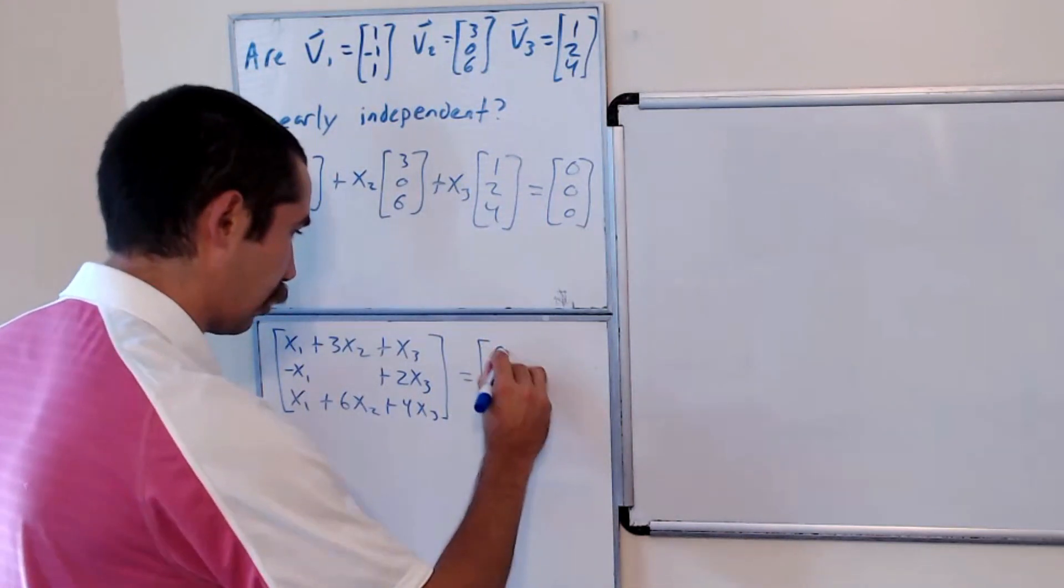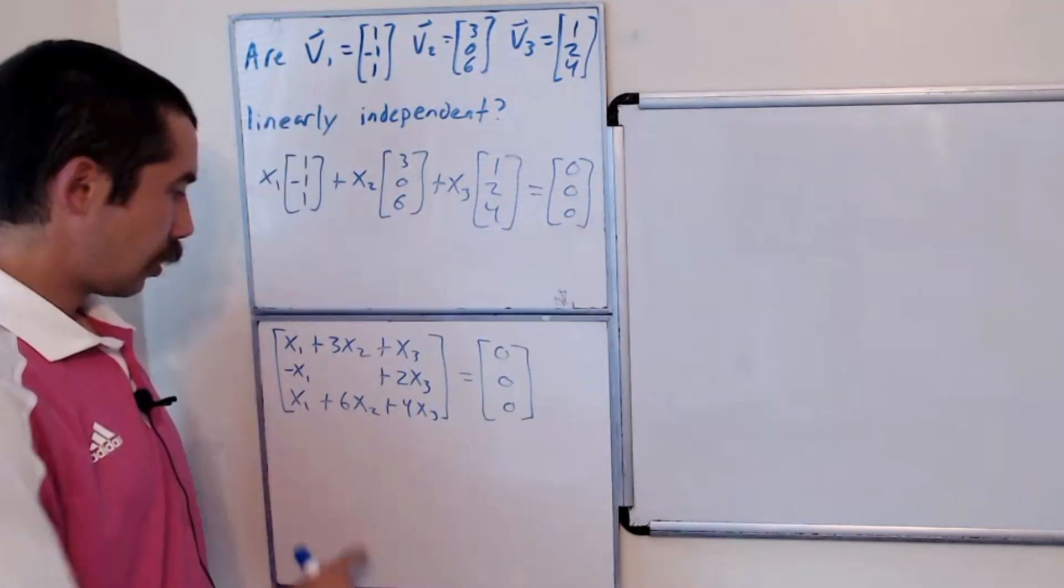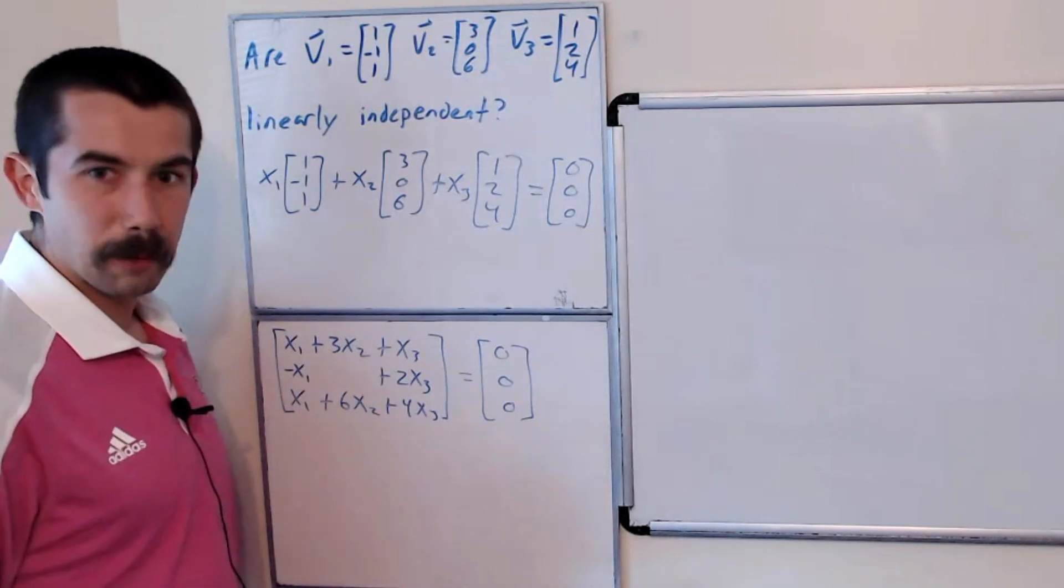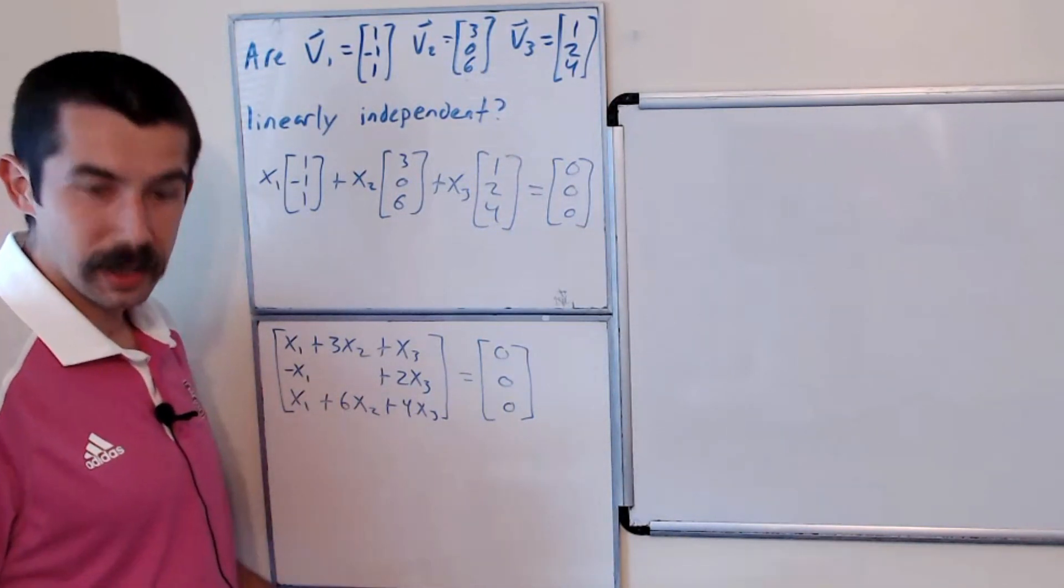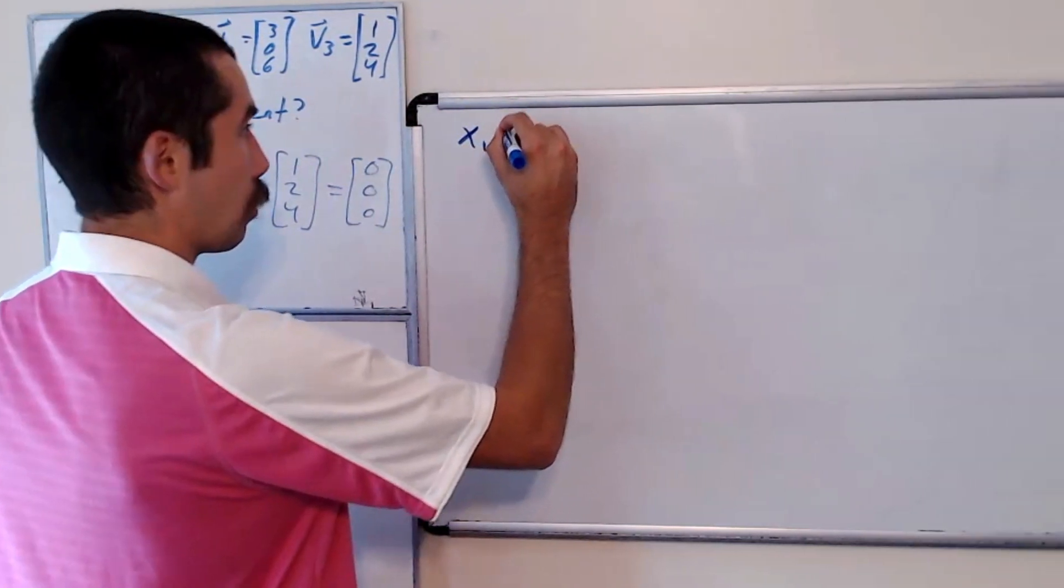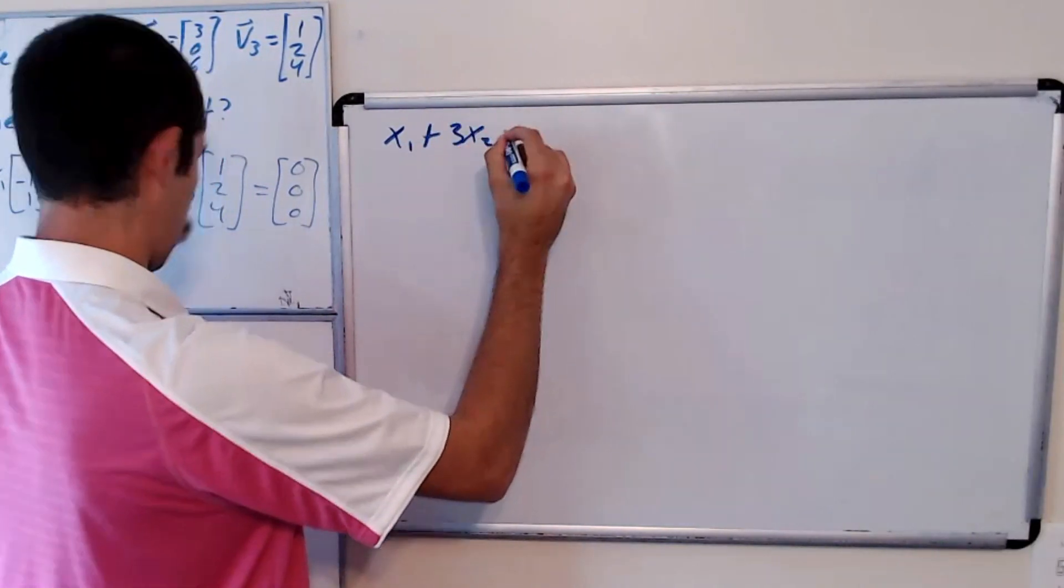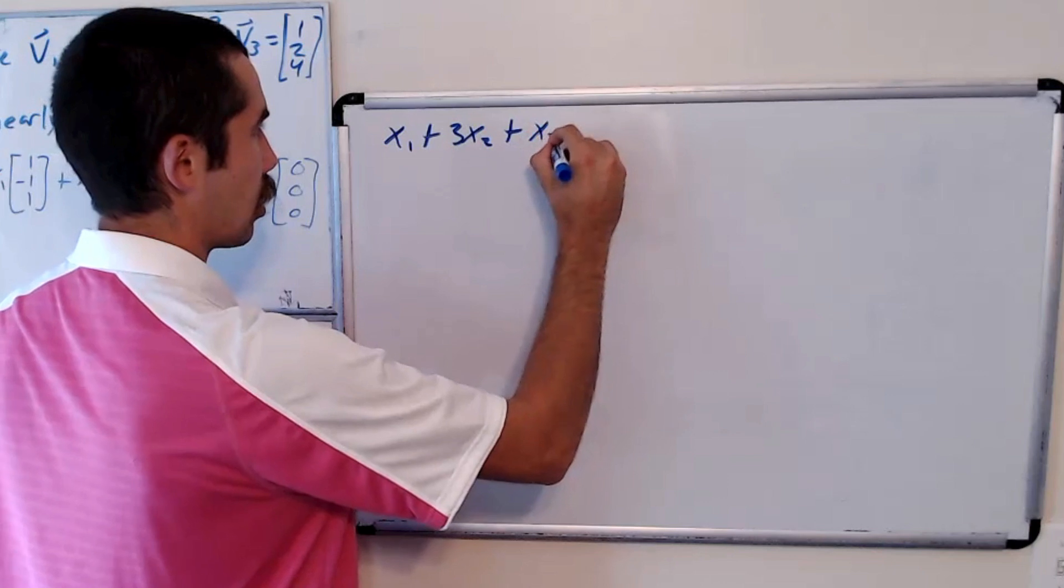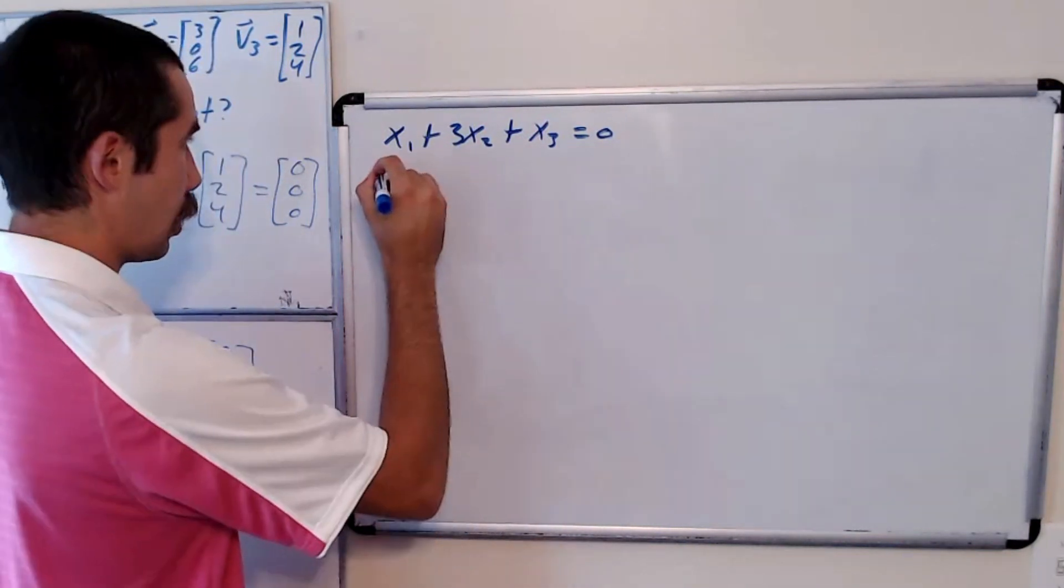this is equal to the vector 0, 0, 0. So if these two vectors are equal, each of their components must be equal. That is to say that x1 plus 3x2 plus x3 equals 0, negative